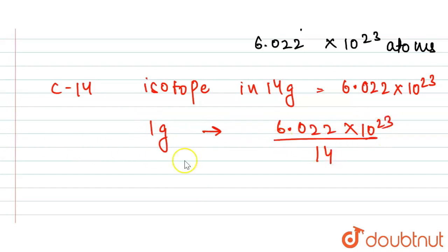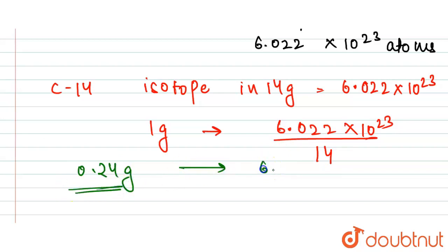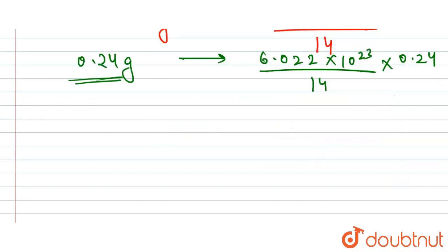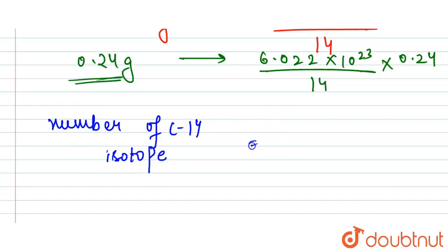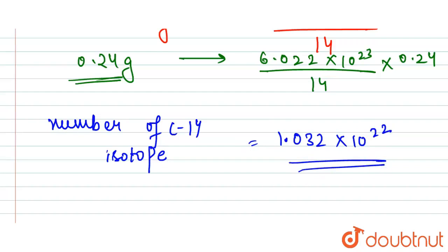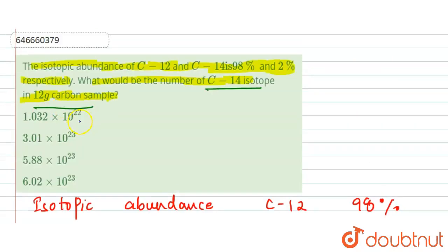For 0.24 grams of C-14, the number of C-14 isotopes = (6.022 × 10²³ / 14) × 0.24. Therefore, the number of C-14 isotopes equals 1.032 × 10²². This is our required answer, and that is option number one.